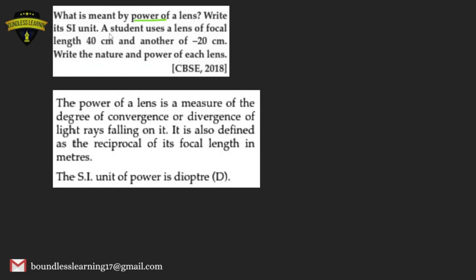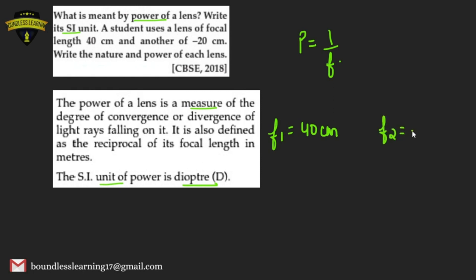Next question: what is meant by the power of a lens and its SI unit? Power of a lens is a measure of the degree of convergence or divergence of light rays. It is defined as the reciprocal of its focal length. Its SI unit is diopter. A student uses a lens of focal length 40 cm — positive focal length means it is a convex lens — and another of −20 cm, which is a concave lens.